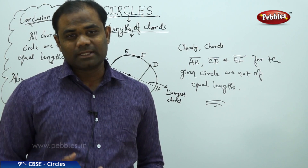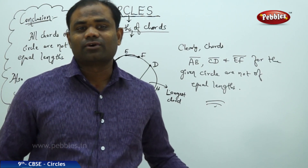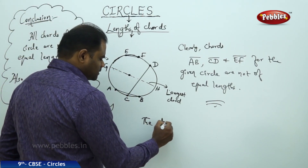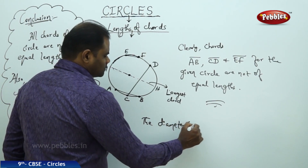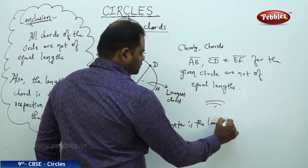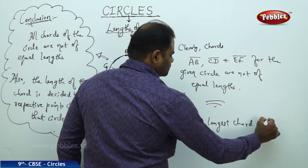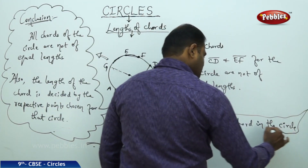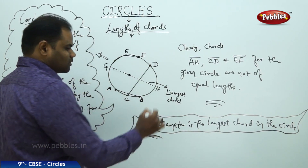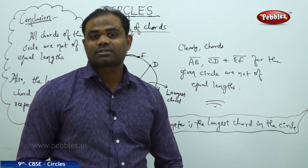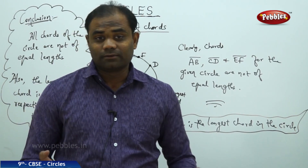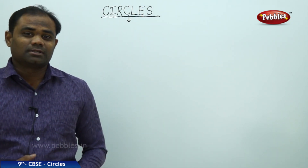The diameter is the longest chord in the circle. The length of chords of the circle are not of equal lengths. This is how we conclude the session. Now that we have defined the various properties of the circle, most importantly the chord and the diameter, now comes how we connect the diameter with the basic definition of the circle — the radius.